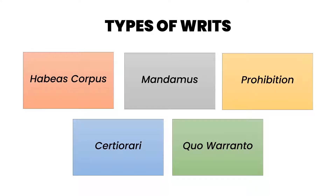Now let's look at the types of writs. The five writs are: first, Habeas Corpus; second, Mandamus; third, Prohibition; fourth, Certiorari; fifth, Quo Warranto. Now let's look at what each writ means, when it can be issued, and how it can be enforced.